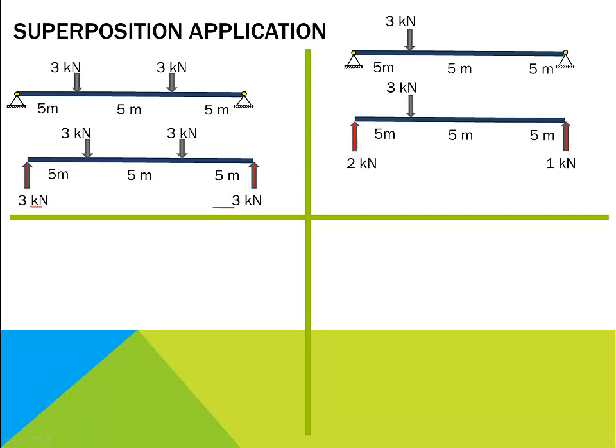So first, remove the right hand side load of 3 kN and calculate the resulting reactions. Calculation of reaction will give reaction at left as 2 kN and at right as 1 kN.